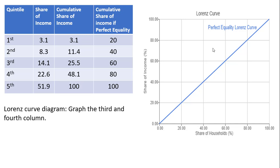If everybody earned the same income, if all households had the same exact income, the Lorenz curve would be an upward sloping line at a 45 degree angle.